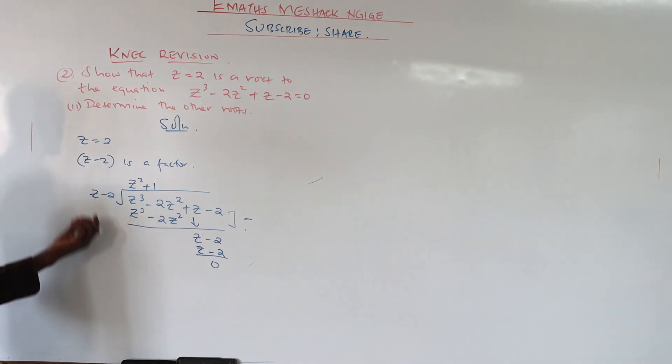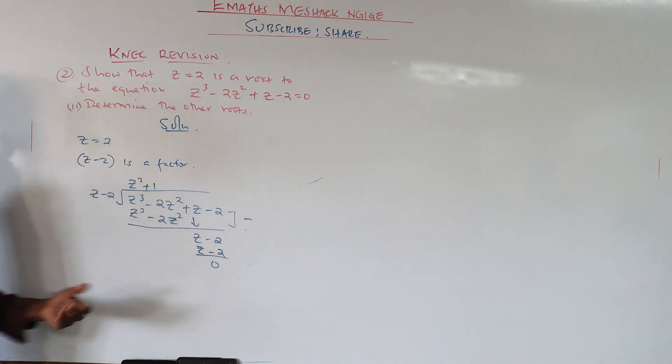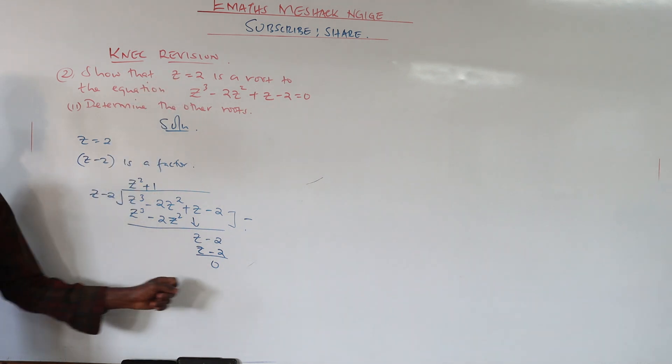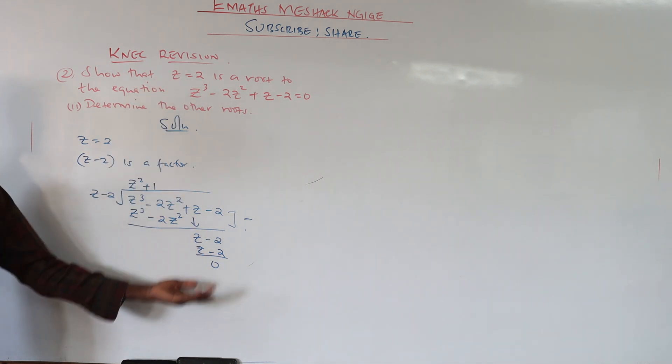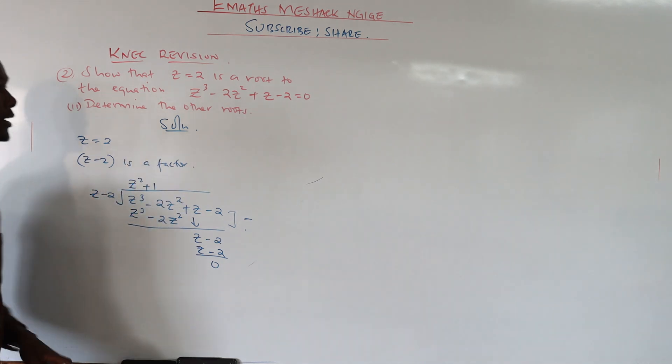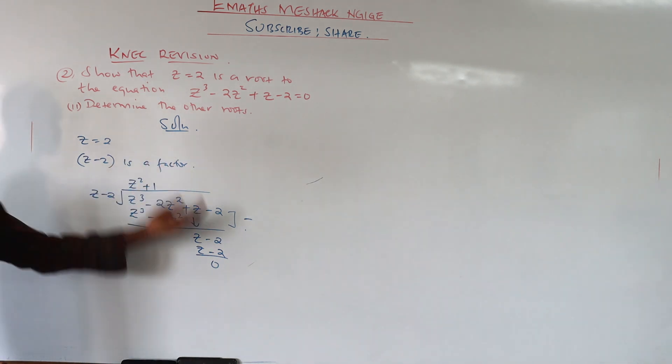The fact that this factor has divided this term shows that indeed this one is a root without a remainder. Are we together? It has divided without a remainder, so this is a root. We have already shown that.